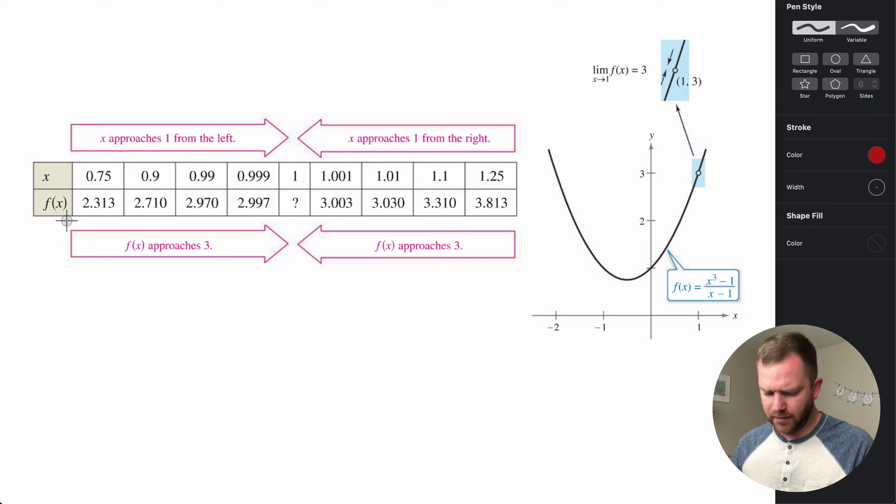Remember, we have to approach the value of x equaling 1 from both the left and the right, and the y values have to be approaching the same thing. As we move closer and closer to 1, we're going to pick values that are getting close to 1. Since we know at 1 it's not actually defined, what is this approaching?